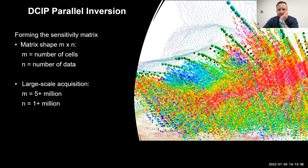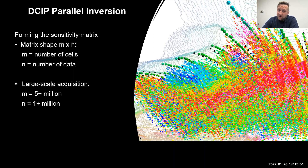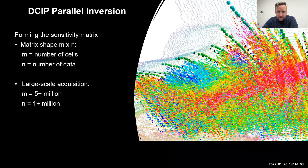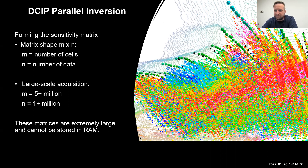Before we scale up, let's take a step back and look at what forming J — the sensitivity matrix — actually looks like. The matrix shape is roughly the number of cells by the number of data. For a large-scale acquisition with 5 million cells and a million data points, that matrix is getting very big. Storing one of those matrices in RAM is not really possible — well over a terabyte — and for the average geophysicist with a workstation, that's going to be tough.